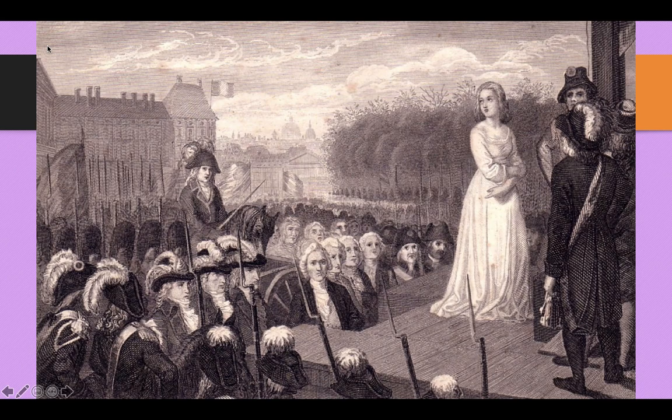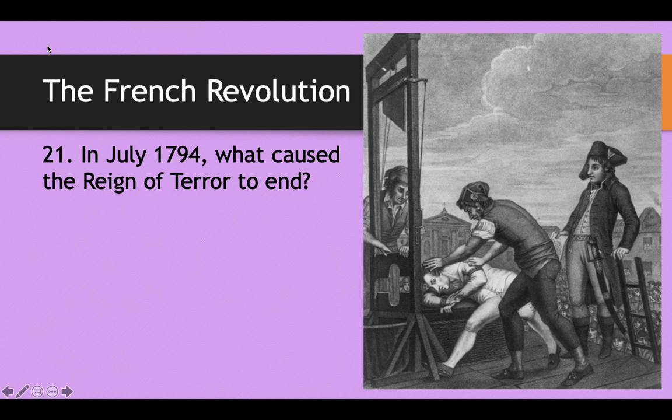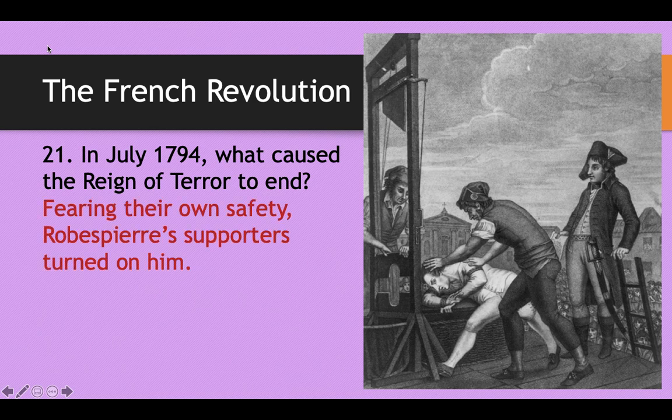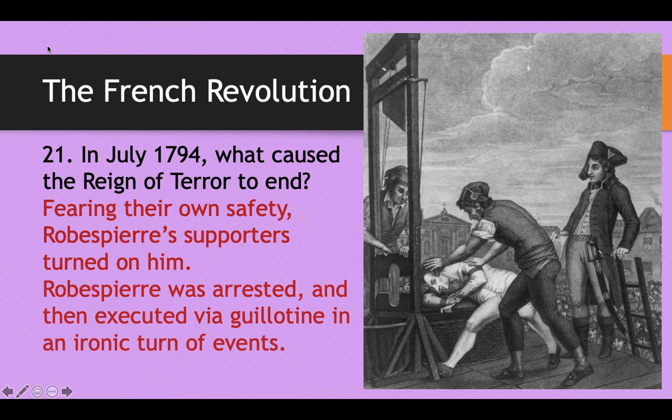In July of 1794, after Robespierre had executed over 40,000 people, he had begun to turn on his own people. He even had his friend George Danton, a fellow Jacobin, executed just because he could. People around Robespierre became very afraid that he might turn on them next. So Robespierre's own supporters turned on him to save themselves — he was arrested and then executed by the very same guillotine he had used to kill 40,000 others. A very ironic and justified turn of events.